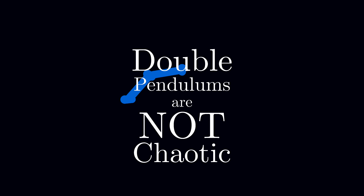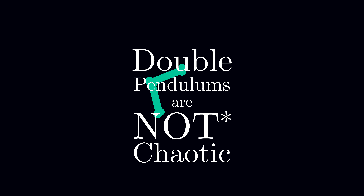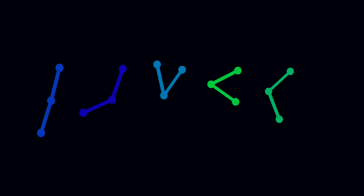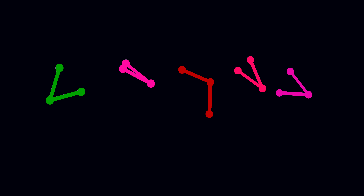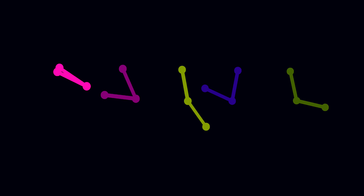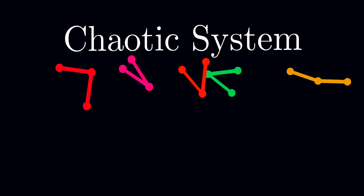Double pendulums are not chaotic — or at least not all of them. You've probably seen videos where a tiny deviation in similar double pendulums amplifies over time, until they completely desynchronize. This system is so sensitive to initial conditions that it's practically unpredictable, so we call it chaotic.